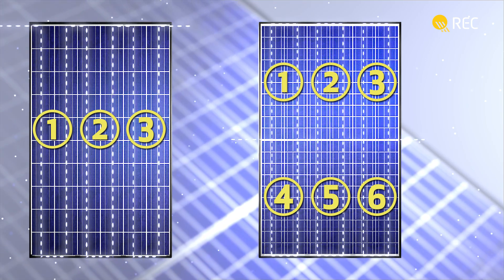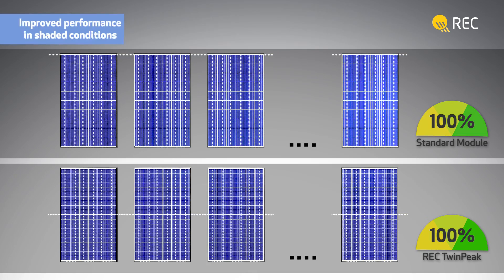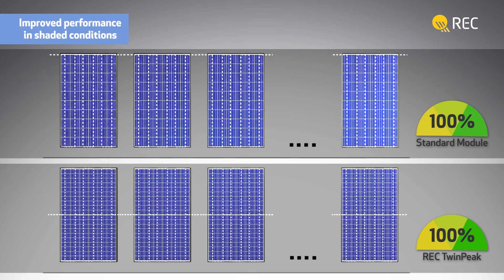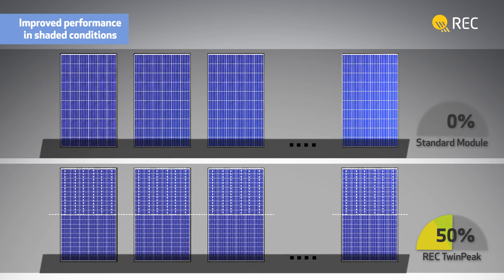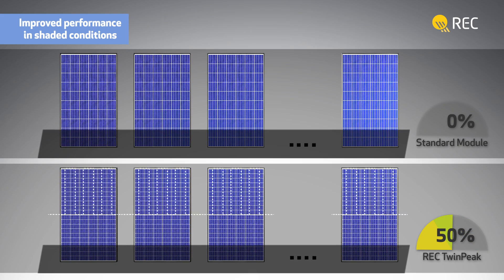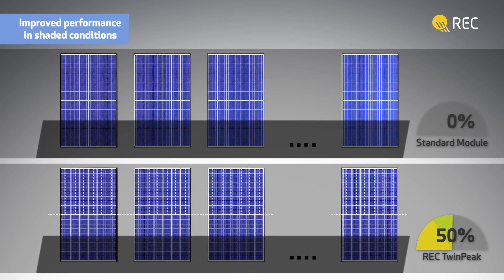If shade falls on any part of a standard panel, this causes at least one string, that means one-third, to stop producing electricity. And shade across the bottom row of cells is enough to stop generation in a standard panel completely.